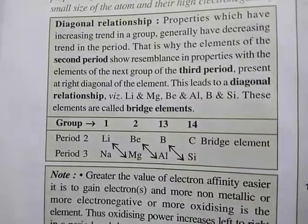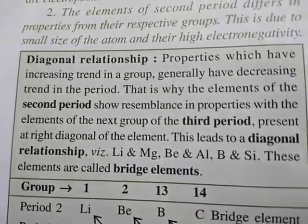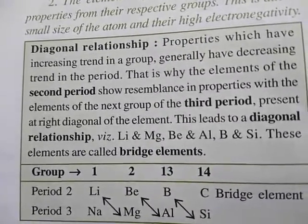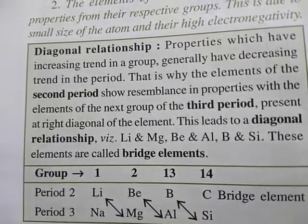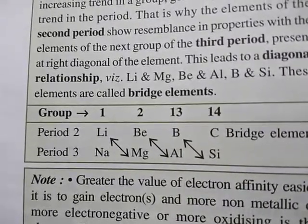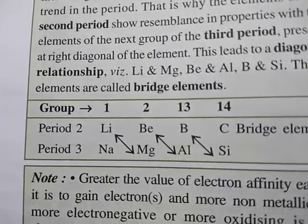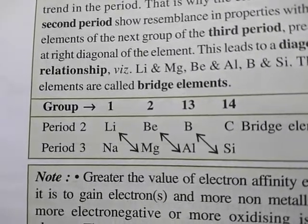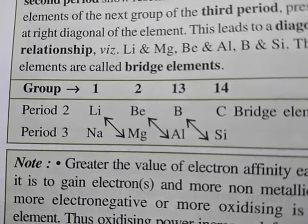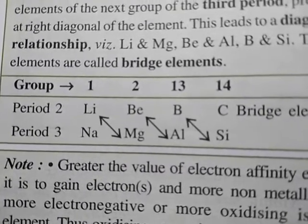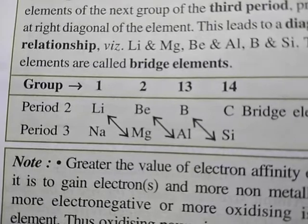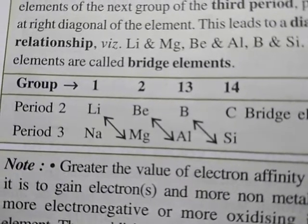Now let us see the box on page number 14, left-hand column — that is diagonal relationship. In mathematics and geometry, you know what diagonal means: opposite sides or opposite corners. Likewise, certain elements have similar properties based on diagonal relationship. In period 2 and period 3, some properties of lithium match with magnesium, some properties of beryllium match with aluminum, and some properties of boron match with silicon.